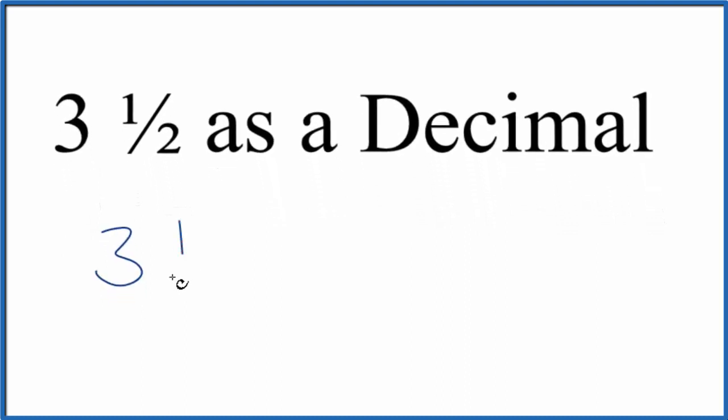So 3 and 1 half, we could take 3 times 2 plus 1, so 6 plus 1 is 7 over 2, and that's an improper fraction.